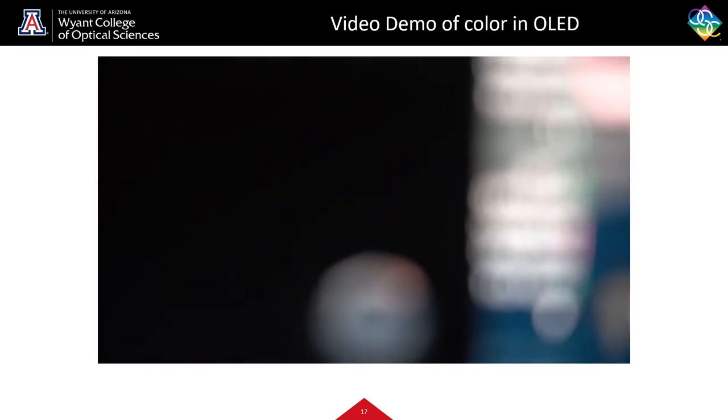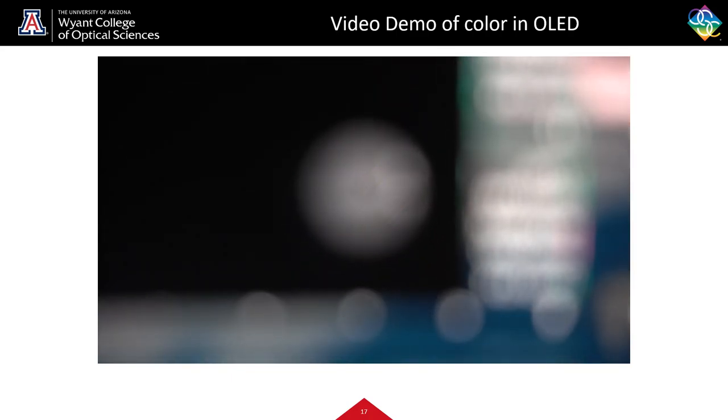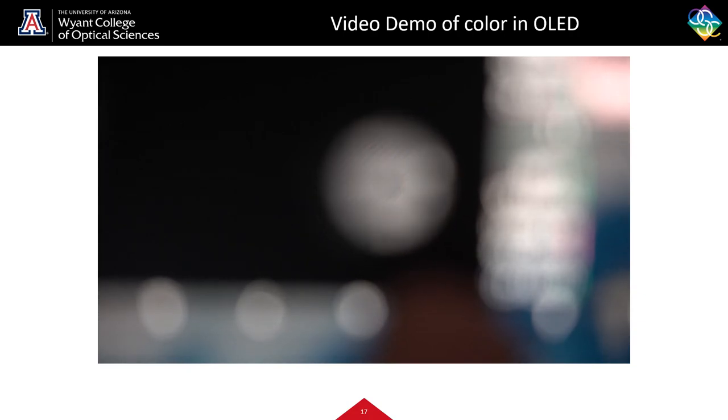The OLED has this diamond-like pattern because each individual organic component has its own small pixel, allowing a higher density of pixels than an LCD — important since we hold phones closer to our faces than TVs. OLEDs are also more flexible than traditional LCDs because they don't need a rigid backlight or diffuser plate. However, the downside is that the organic components tend to burn out compared to metallic filaments.